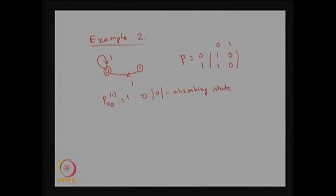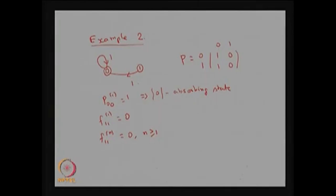Now we will find the classification of state 1. If we find F(1,1) of 1 — the probability that the system returns to state 1 given it was in state 1, as a first visit exactly in the first step — that is not possible because with probability 1 it moved to state 0. Therefore F(1,1) of 1 is 0, and for all subsequent steps F(1,1) of n is also 0, since the system goes to state 0 with probability 1 and does not come back. Therefore capital F(1,1) — the sum of all F(1,1)(n) — is 0.